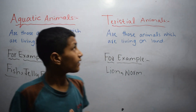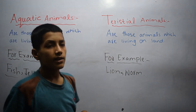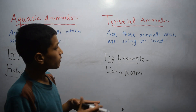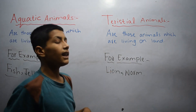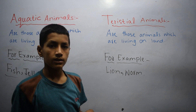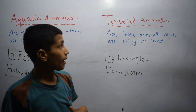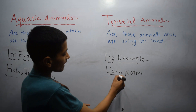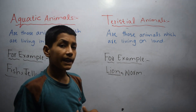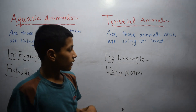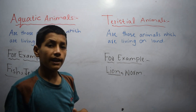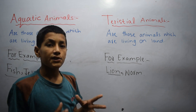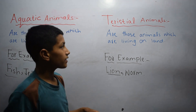Now let's come to terrestrial animals. Terrestrial animals are those animals which are living on land. For example, lion. Lion can live, find shelter, and survive on land.